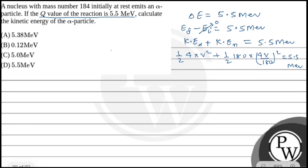Taking out common factors: (1/2)(4v²) times [1 + 180 × 16/(180²)] = 5.5 MeV. If we solve it, 180 cancels out and we get 1 + 1/45. This gives us the kinetic energy of the alpha particle.